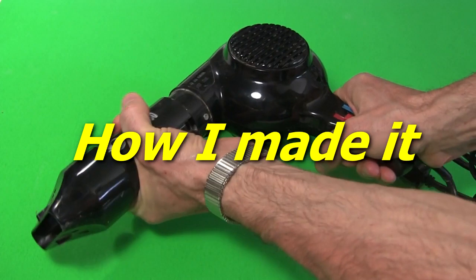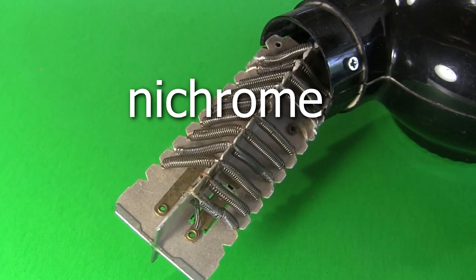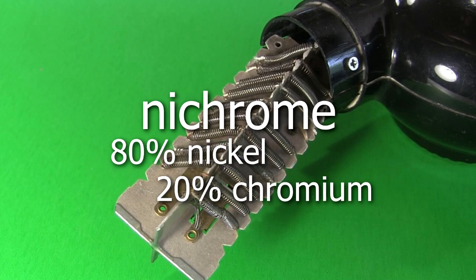Here's how I made it. I start with this old hair dryer. The heating wires inside are often nichrome wires, possibly 80% nickel and 20% chromium.